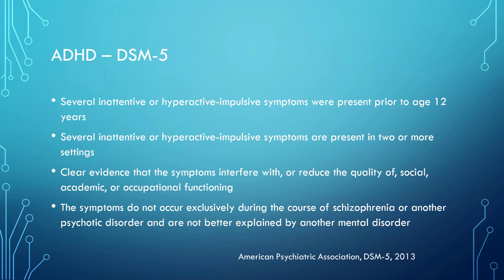Several inattentive or hyperactive-impulsive symptoms have to have been present prior to the age of 12 years. Several inattentive or hyperactive symptoms must be present in two or more settings, and there is clear evidence that the symptoms interfere with or reduce the quality of social, academic, or occupational functioning. Finally, the symptoms do not occur exclusively during the course of schizophrenia or another psychotic disorder and are not better explained by another mental disorder.